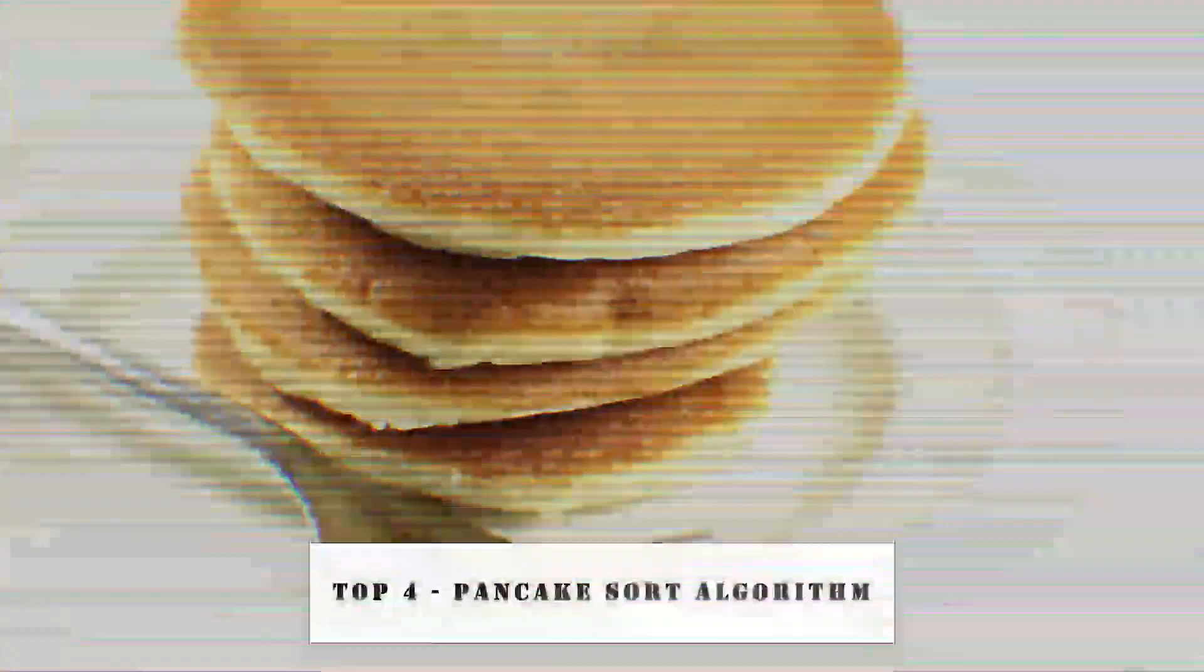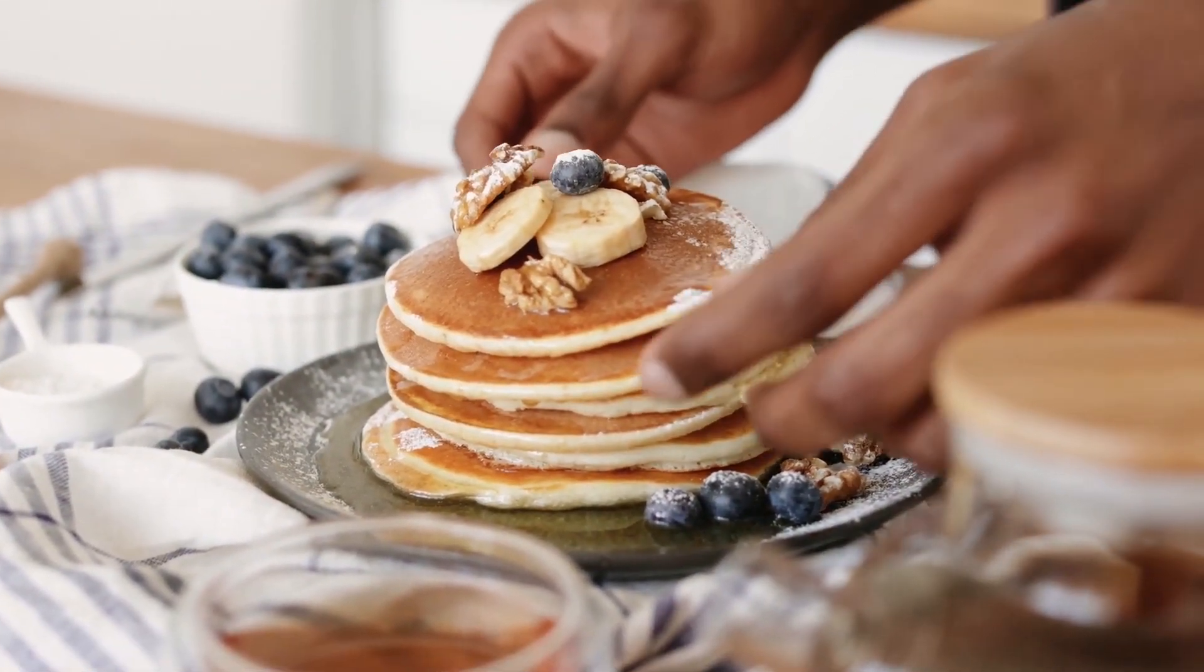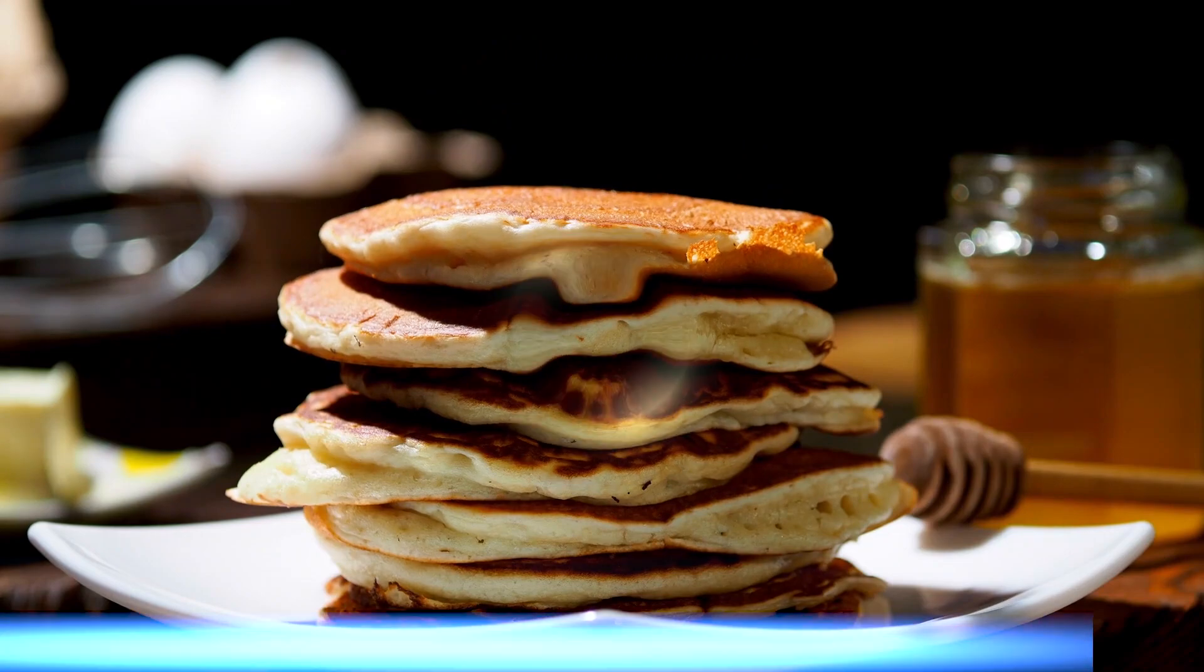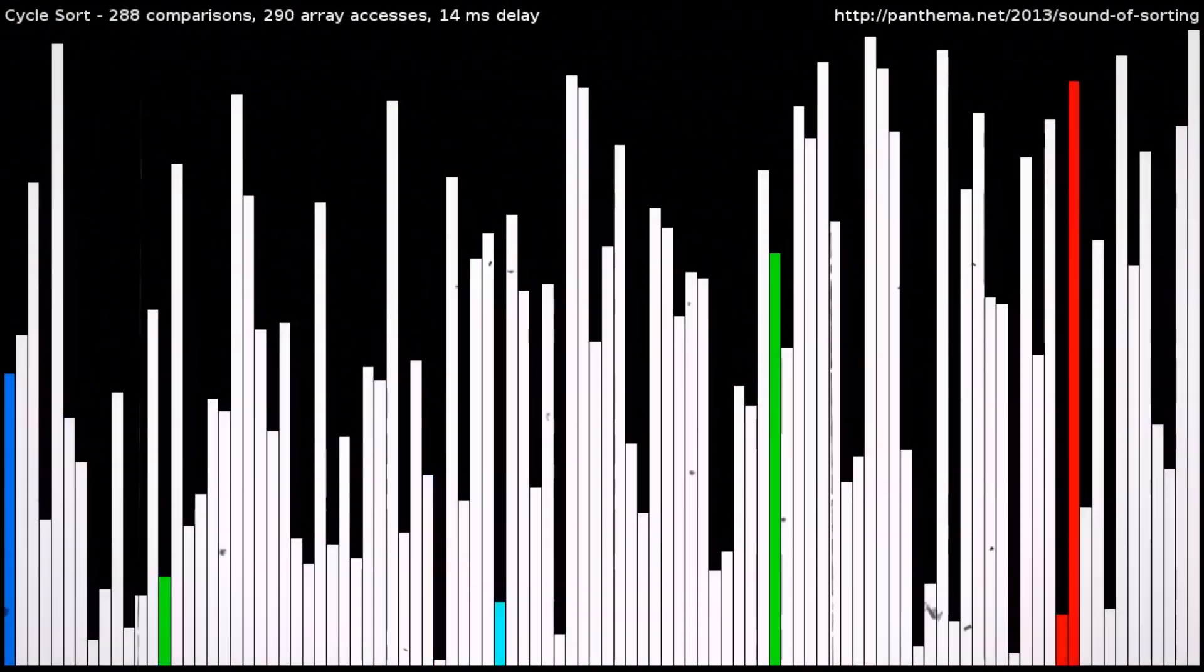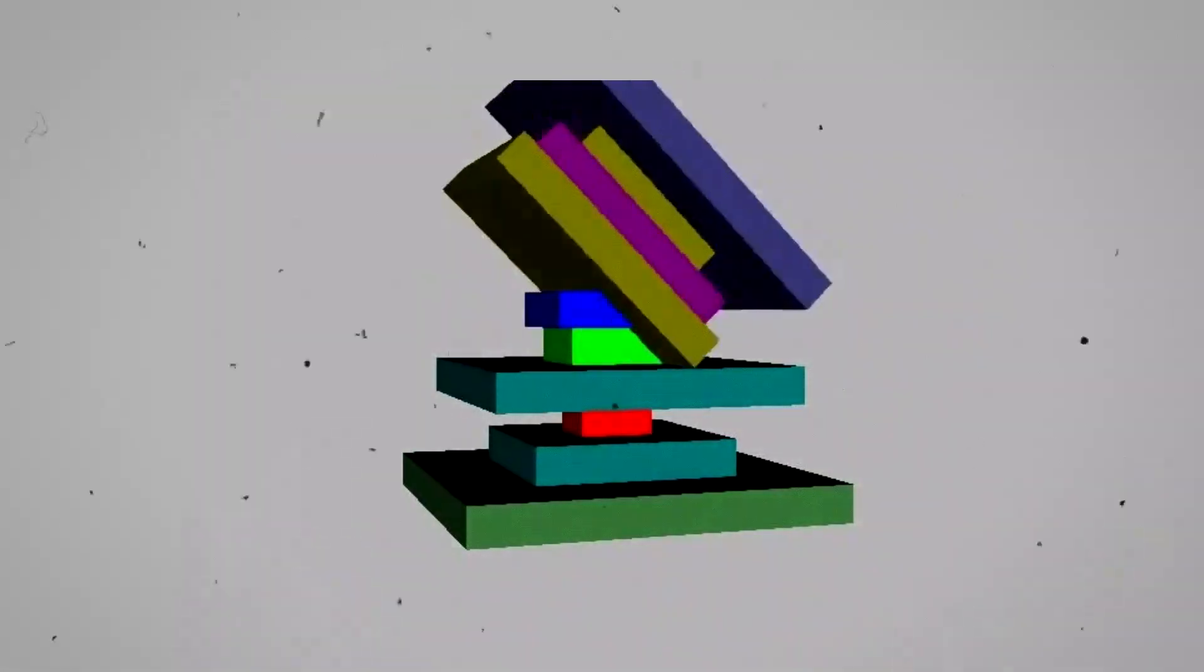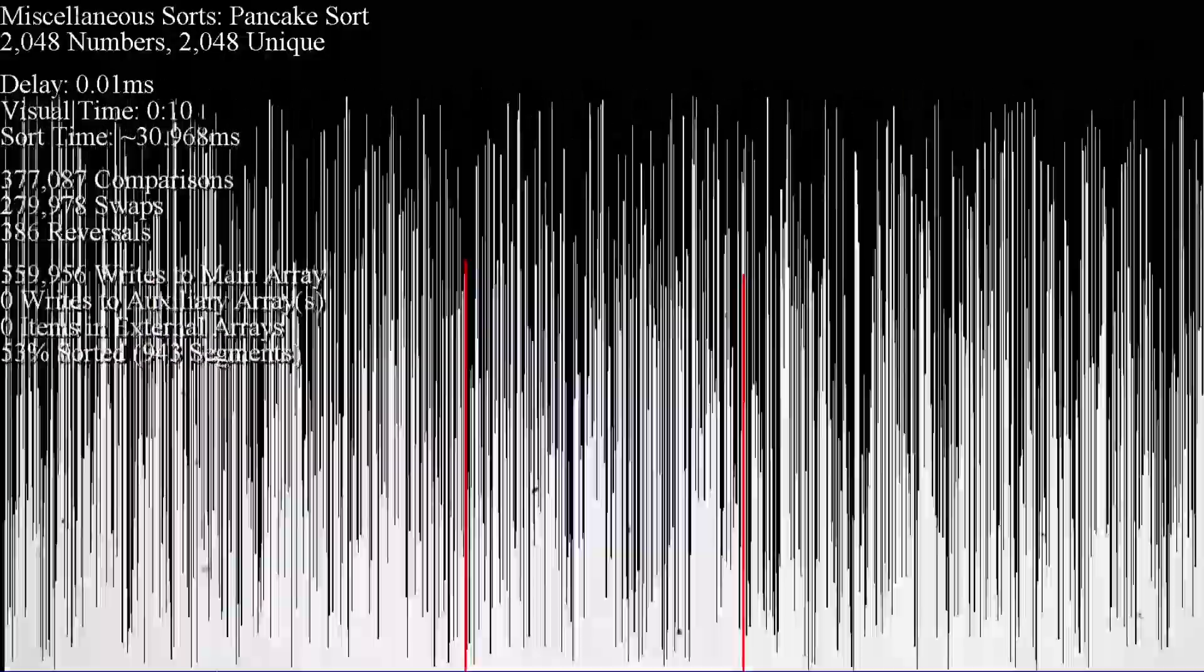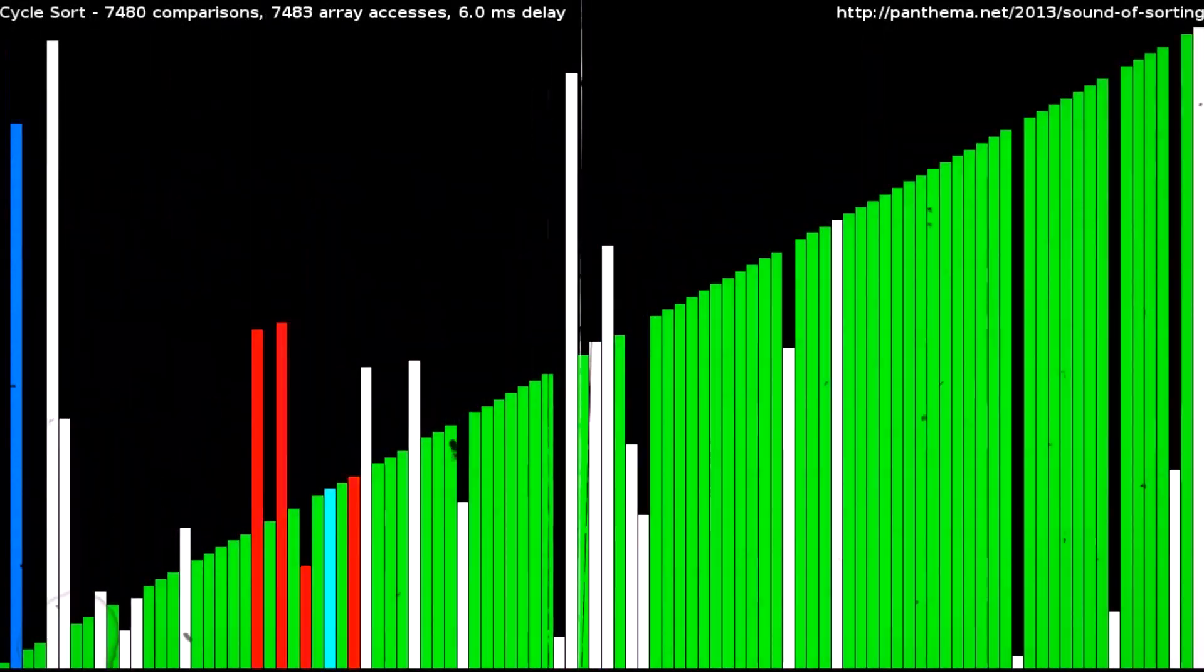Top 4. Pancake Sort Algorithm. Pancake sort is an unconventional algorithm that draws inspiration from the culinary world to solve a sorting problem. The concept is deceptively simple but remarkably intriguing. Imagine a stack of pancakes of different sizes, each with a number indicating its order. The goal is to sort this stack in ascending order using a spatula with a precise rolling action. This spatula can be inserted anywhere in the stack, and it effectively reverses the order of the pancakes, flipping the top.